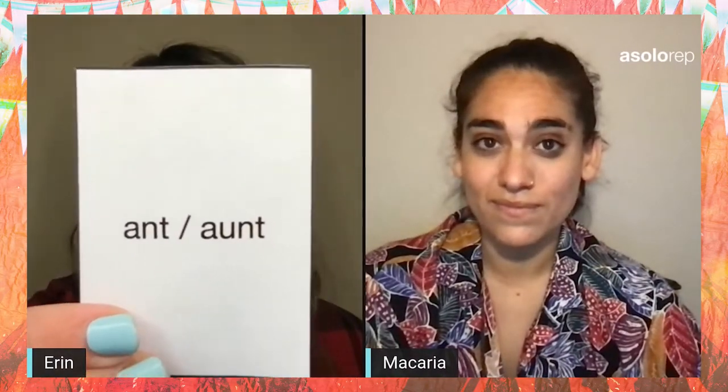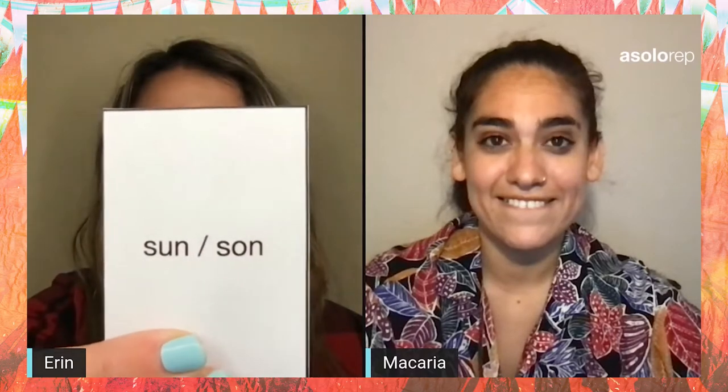Our next card is Ant and Aunt. I just love it when my aunt comes to town. Oh, really? I tend to use spray. And last but certainly not least, we have sun and son. It is the east and Erin is the sun. Actually, my name is spelled E-R-I-N, not A-A-R-O-N, but they do sound the same, kind of like a homophone.